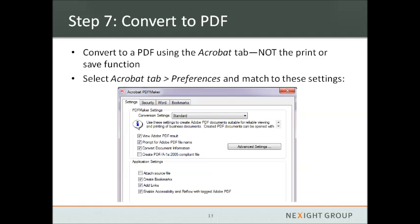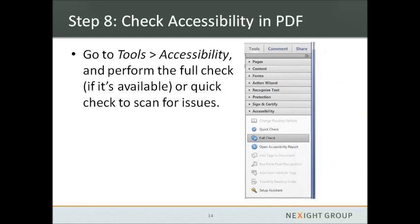Now you're at the point where you want to convert the document to a PDF. It's important that you convert using the Acrobat tab within Word, not the print or save function, as that will not create some of the accessibility code needed. Go to the Acrobat tab, select Preferences, and match your settings to the settings on the screen. Once you've selected the right preferences, hit Create PDF and then check your accessibility within the PDF — Adobe has created a great tool to do both a quick check and a full check to uncover any accessibility issues that you can then go back into Word and correct before you re-PDF it.